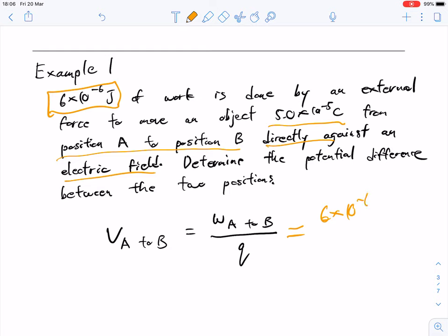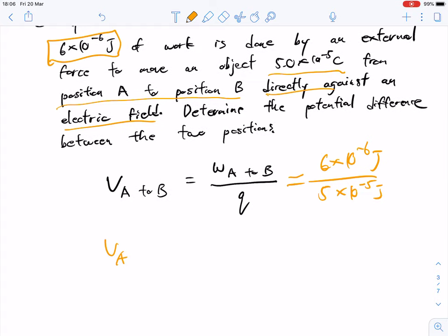So this is just a straight up substitution. 6 times 10 to the negative 6 joules, 5 times 10 to the negative 5 coulombs. And so the result is 0.12 joules per coulomb. So we can also write that as 0.12 volts.